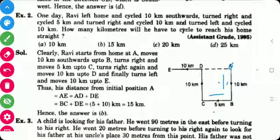in the north direction. He cycled 10 kilometers. Then after that he turned left, means in the west direction, and cycled 10 kilometers.